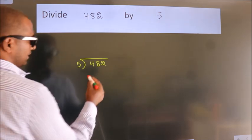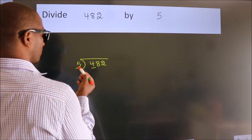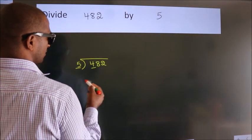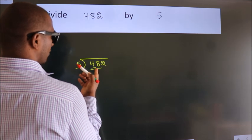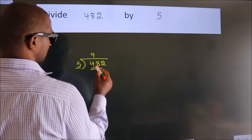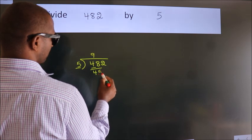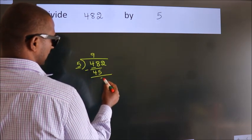Next, here we have 4, here 5. 4 is smaller than 5, so we should take two numbers: 48. A number close to 48 in the 5 table is 5 times 9 equals 45. Now we should subtract. We get 3.